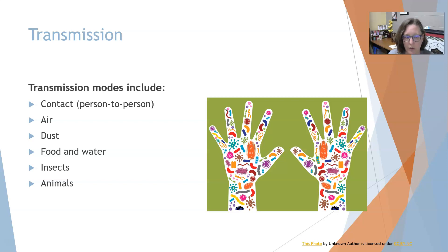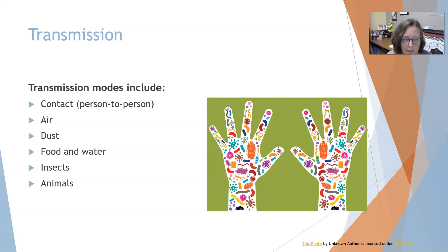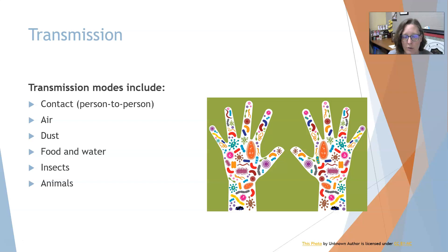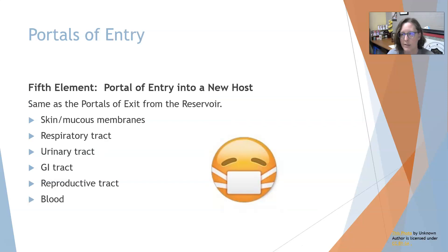Food and water can also be contaminated — if somebody with contaminated hands handles food, you may not know because it's just traces, but you could end up with hepatitis A or salmonella. Insects such as ticks, mosquitoes, and other biting bugs are vectors. Animals can be reservoirs and transmit organisms through an animal bite or handling of animal feces. Infections transmitted from animals to humans are referred to as zoonoses.